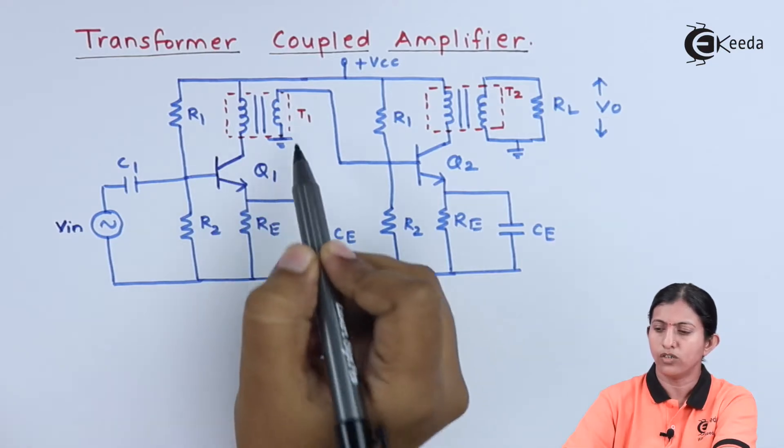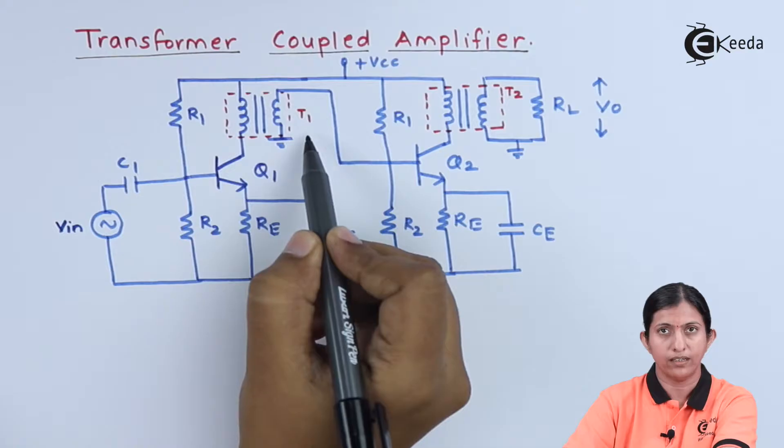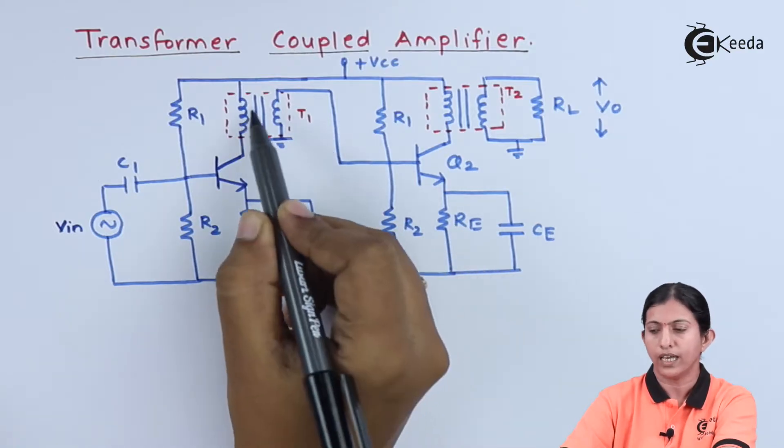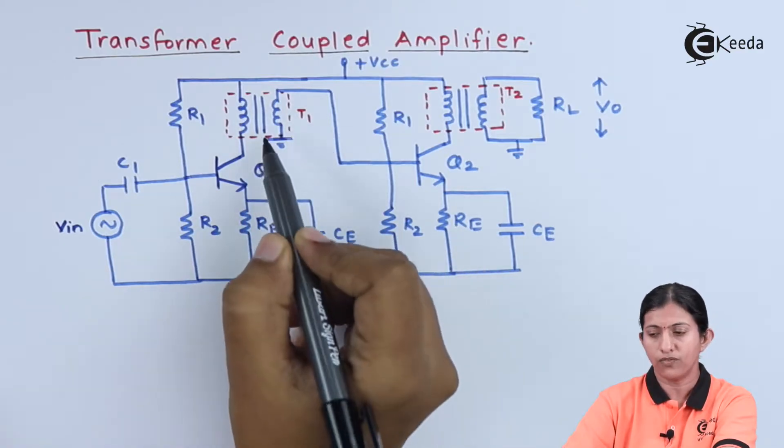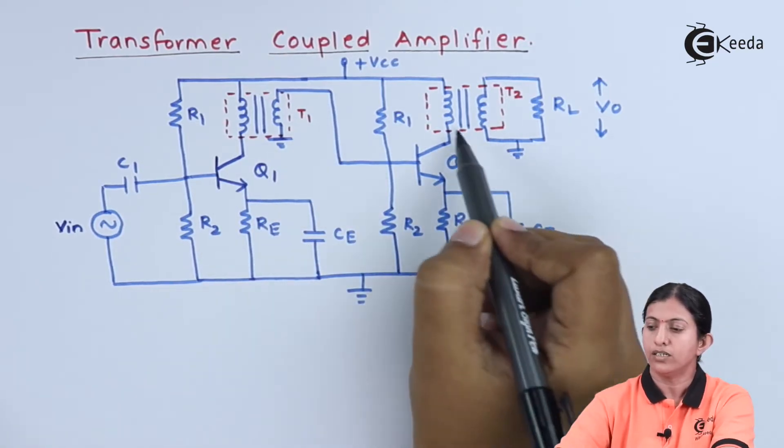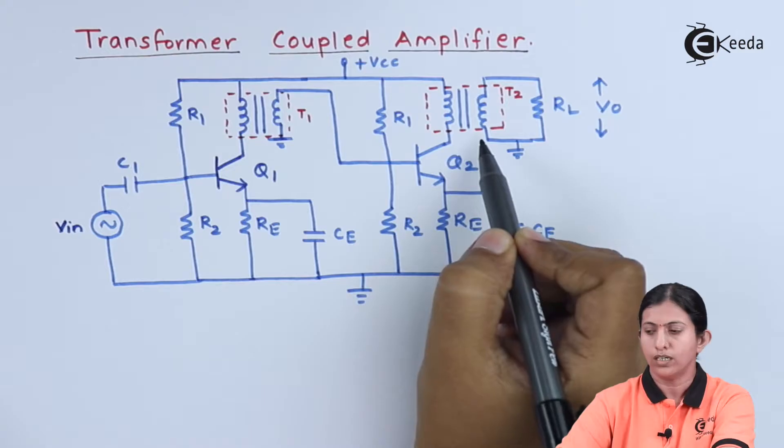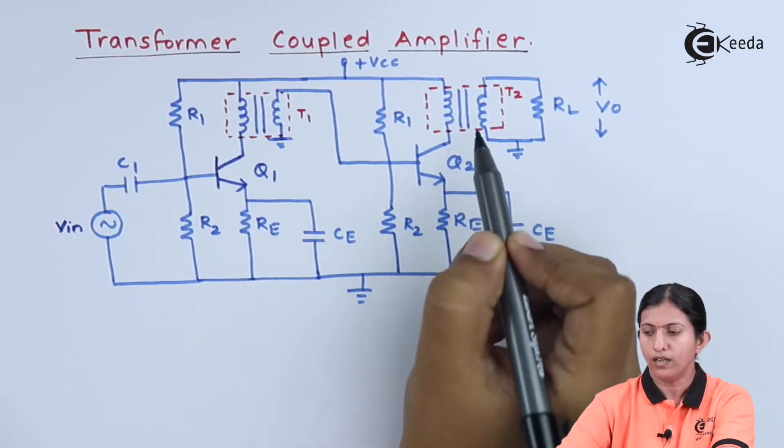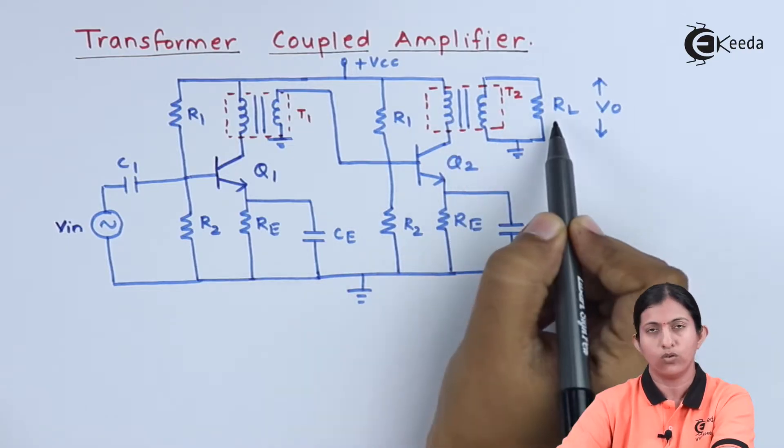Here we are using transformer T1, which couples the AC output signal from the first stage to the input of the second stage, and transformer T2 is used to couple the output to the load resistor.